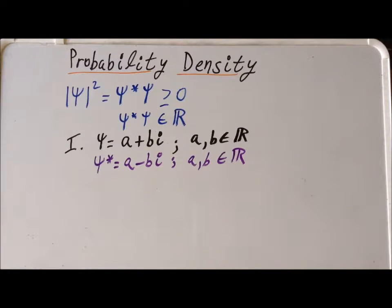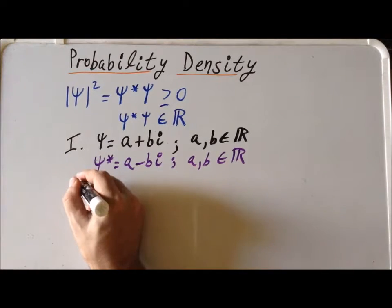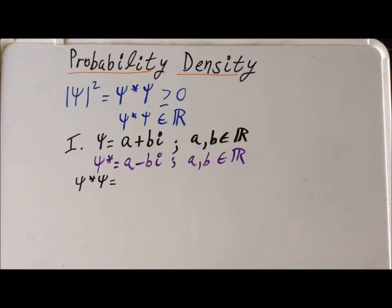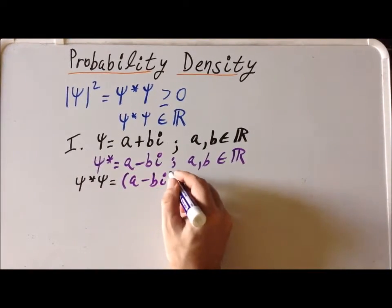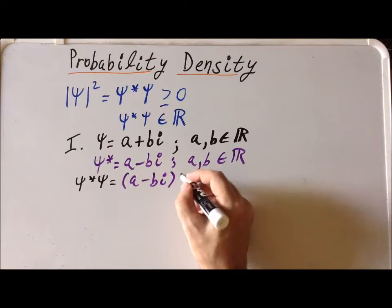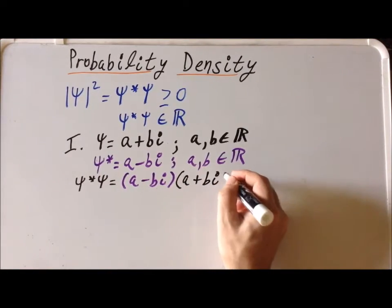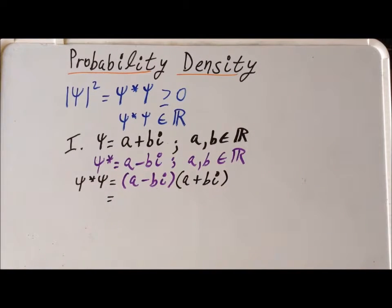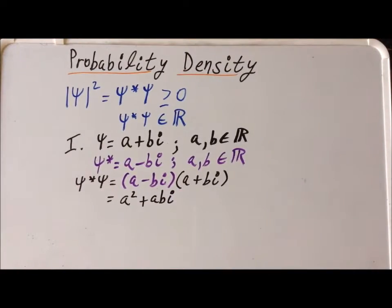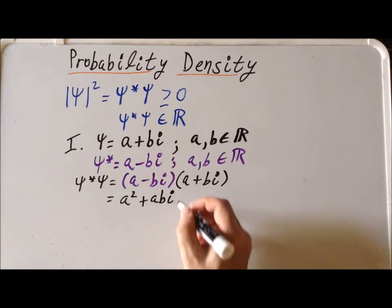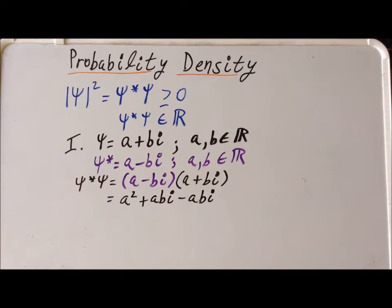Now, what we want to do next is to actually form the product psi star psi. So psi star is going to be a minus bi, and psi itself is going to be a plus bi. We can use the process known as FOIL to determine what this product is going to be. First, we have a times a, which gives us a squared. The next term is a times bi, so we have plus a bi. Minus bi times a gives us minus a bi. And the last term is minus bi times plus bi, which gives us minus b squared i squared.